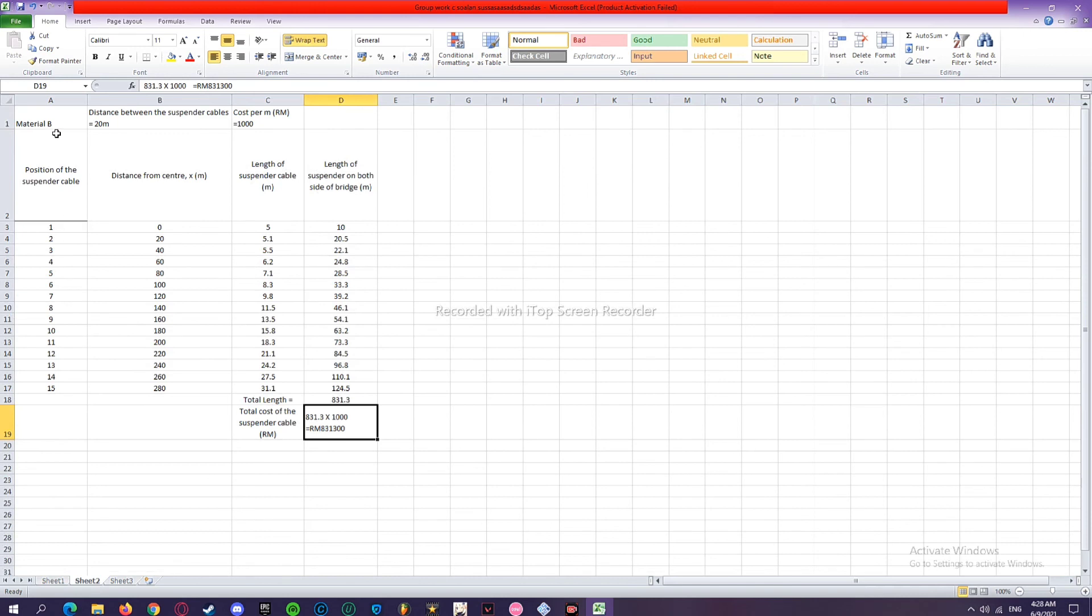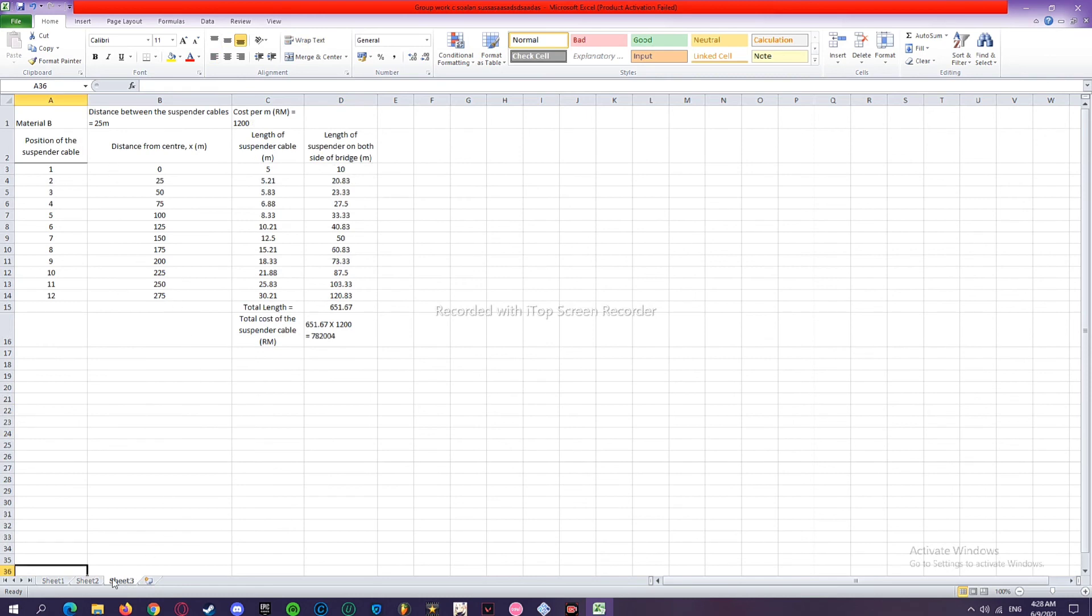Then we will do material B, same as we did at material A. Material C. The answer is C. The total cost of the suspender cables is lower than A and B.